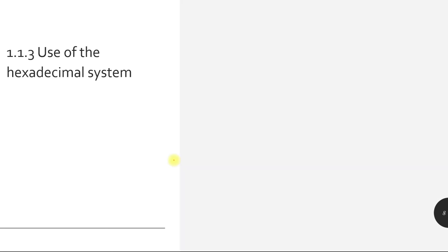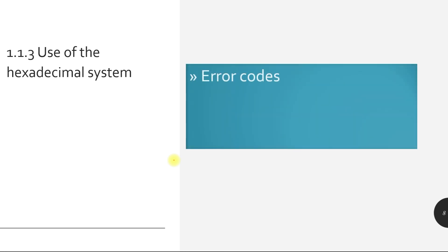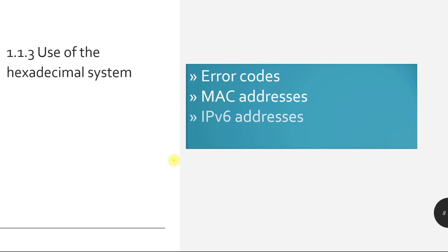To sum up, the four uses of the hexadecimal number system are: error codes, MAC addresses, IPv6 addresses, and HTML color codes.